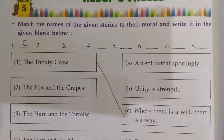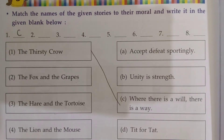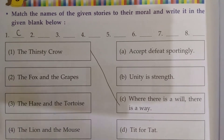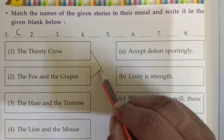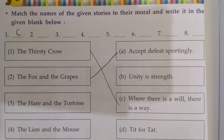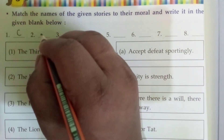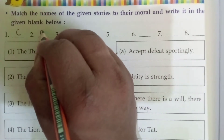For the second one, The Fox and the Grapes — the moral is 'Accept defeat sportingly.' You will write A.